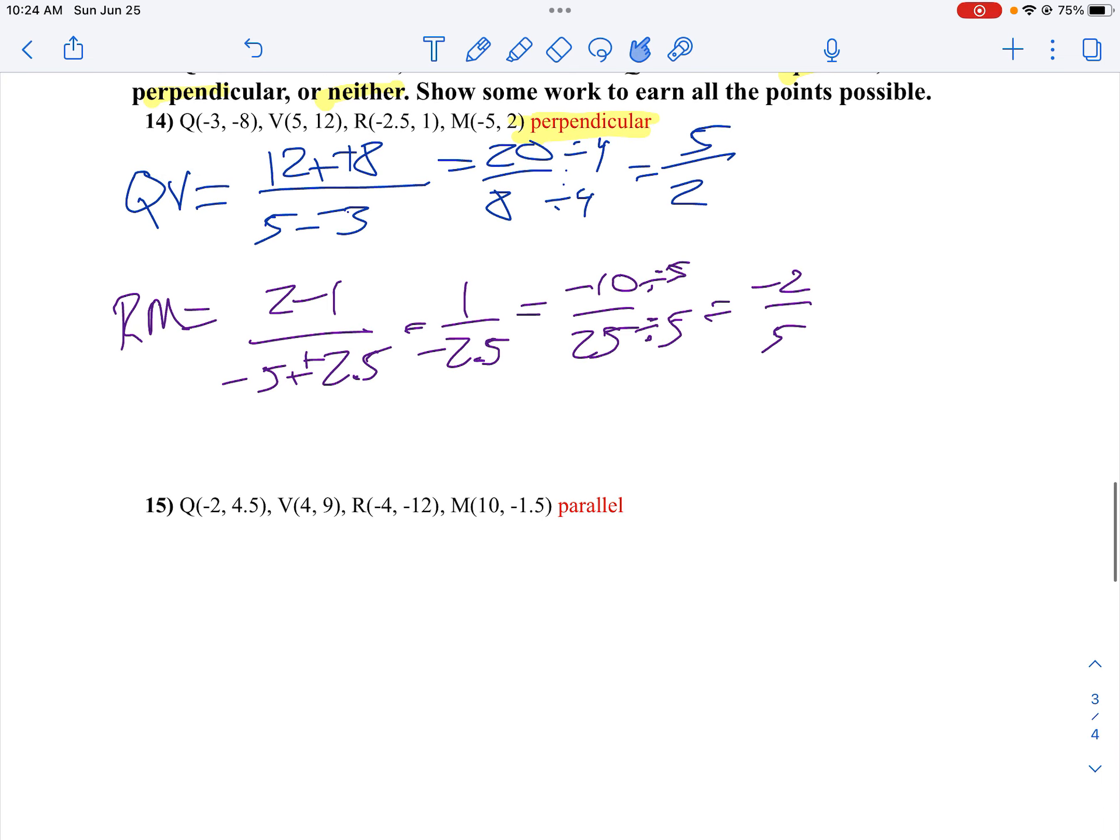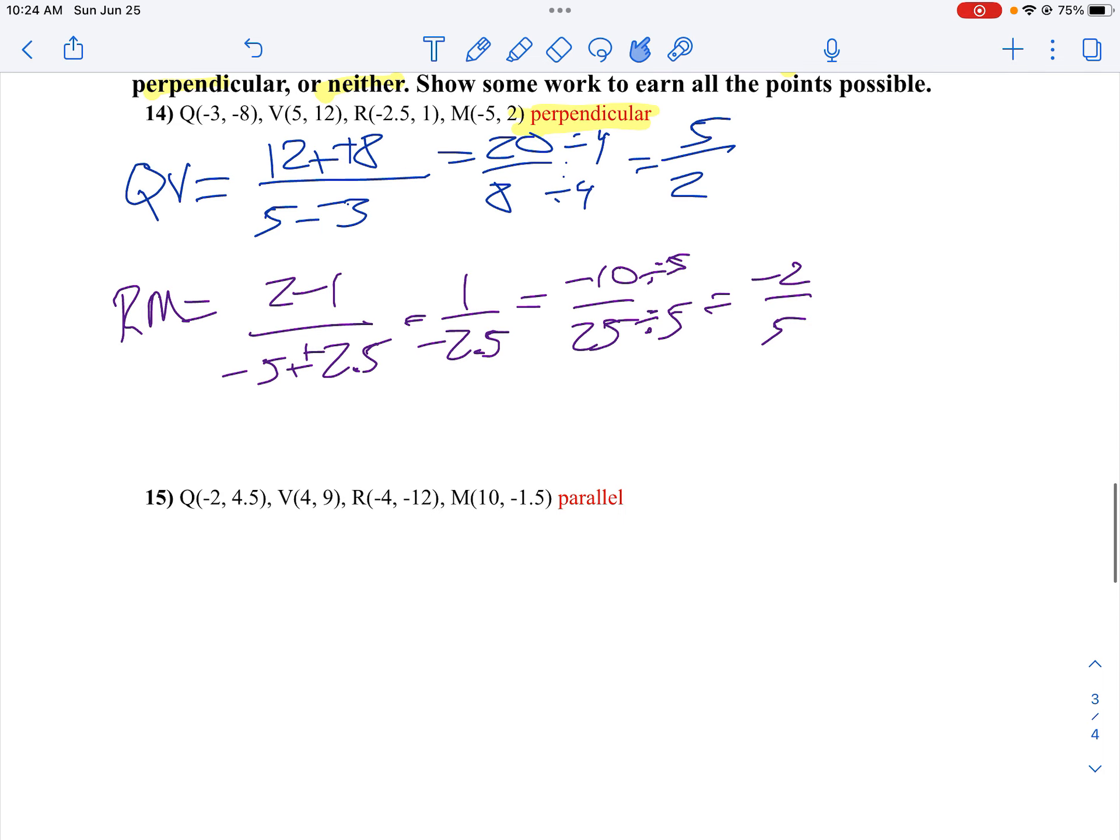We're going to do number 15 the same way. Let's start here. Let's find the slope of Q to V. So I'm going to say 9 minus 4.5 all over 4 minus negative 2. 9 minus 4.5 is 4.5.